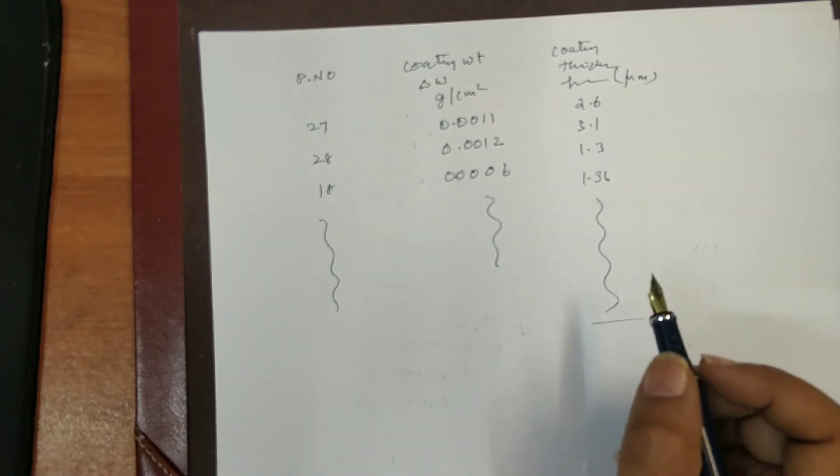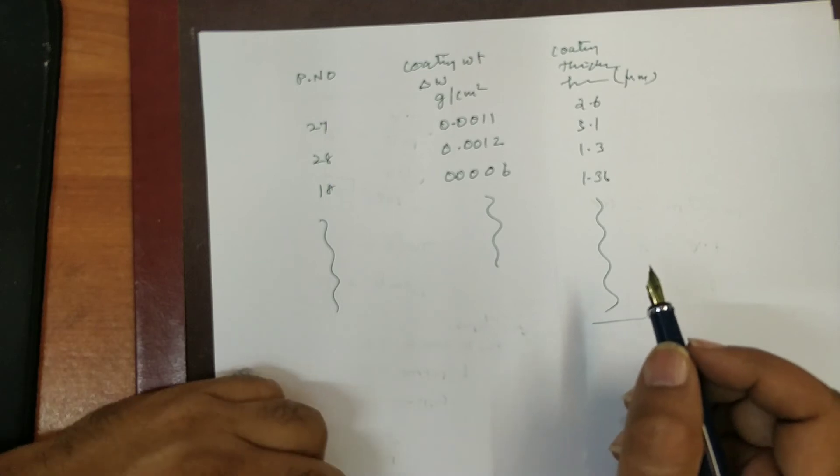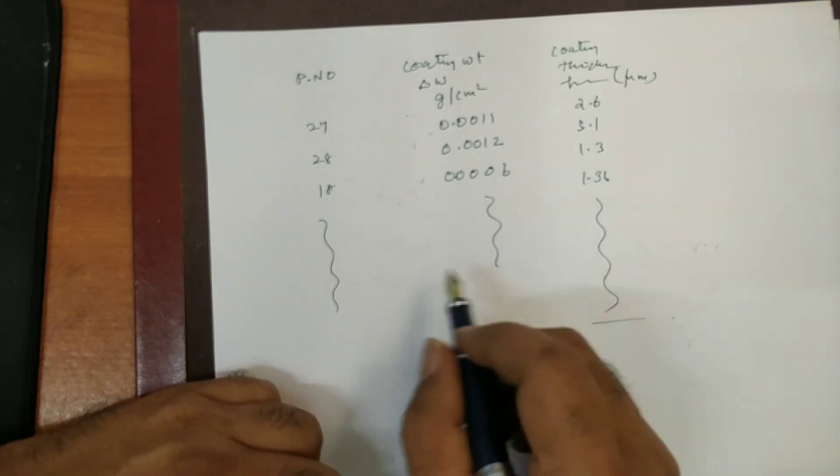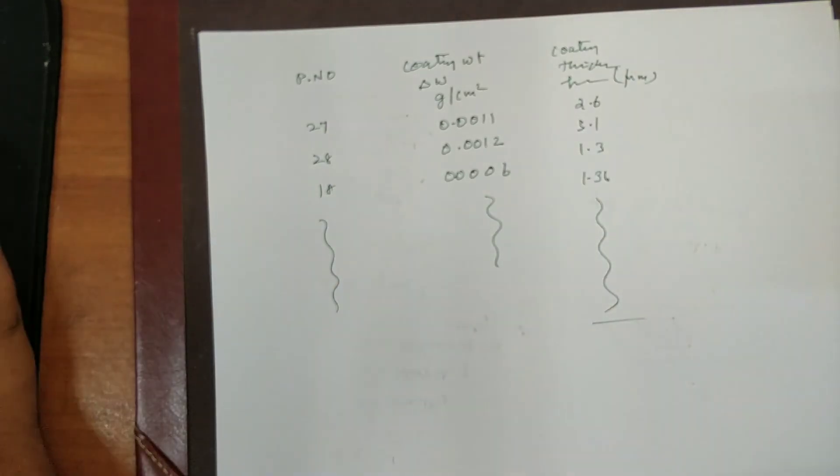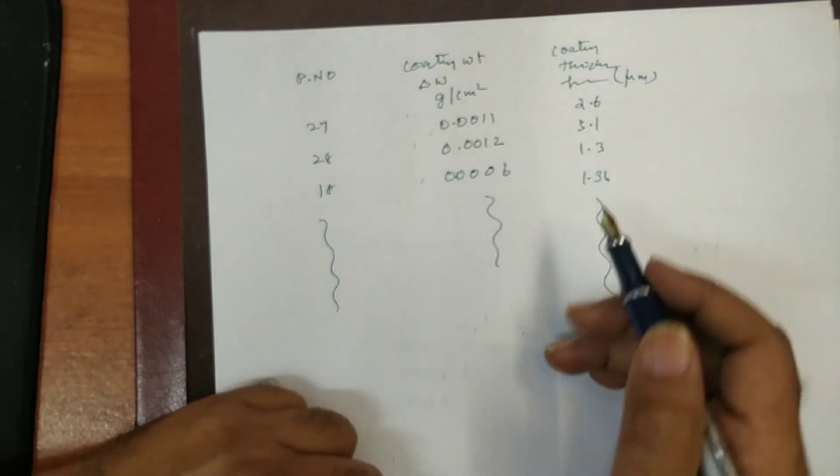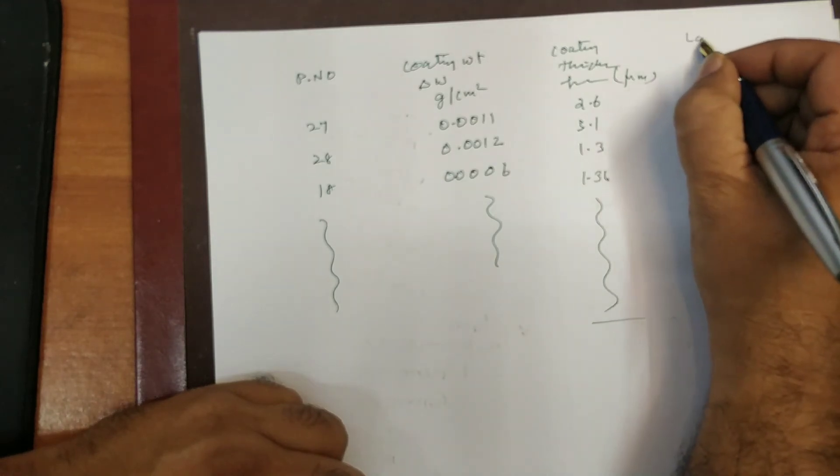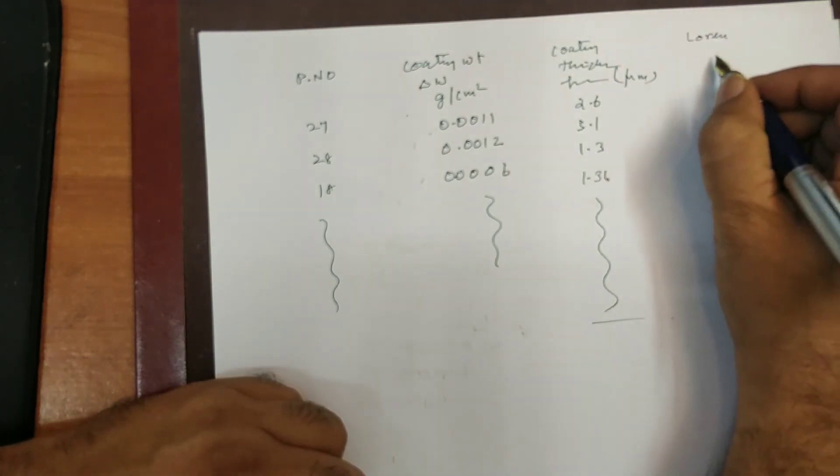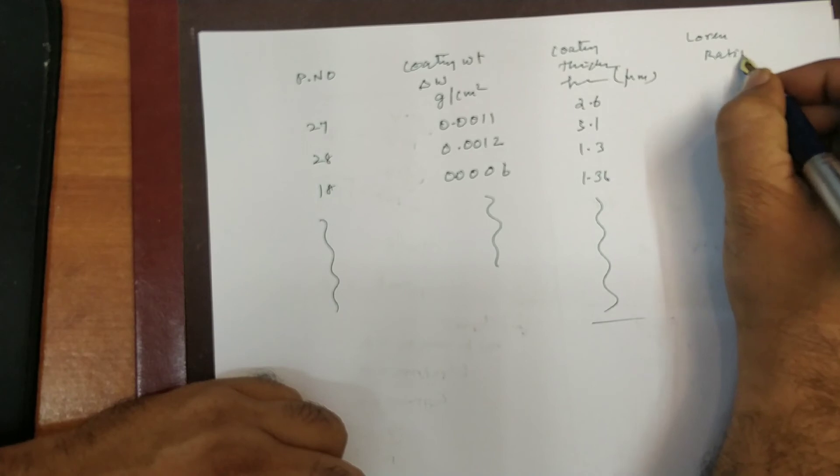And in fact, there is also another parameter called Lorentz ratio. And he also has proved that he has given certain value. And this value is almost closer to the Lorentz ratio.